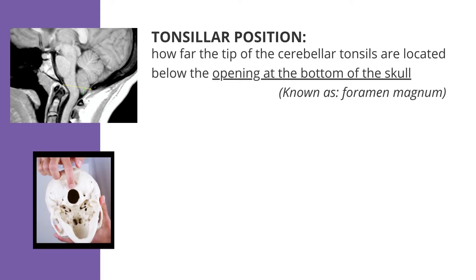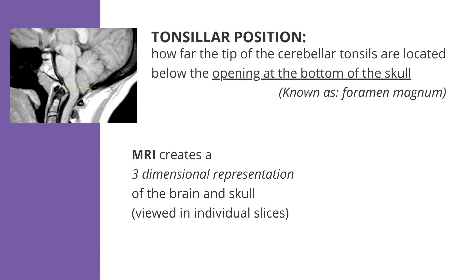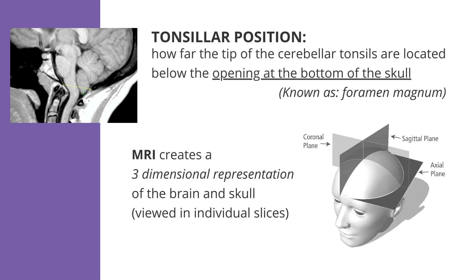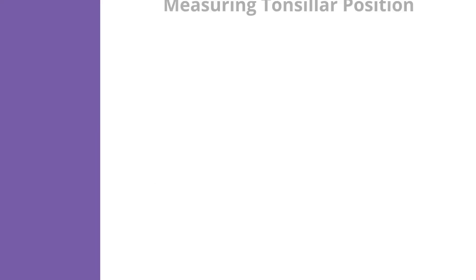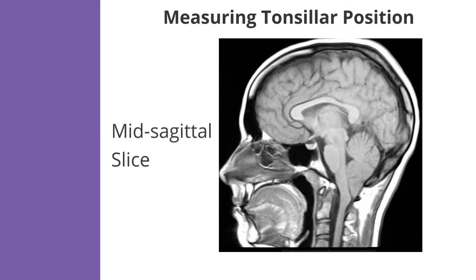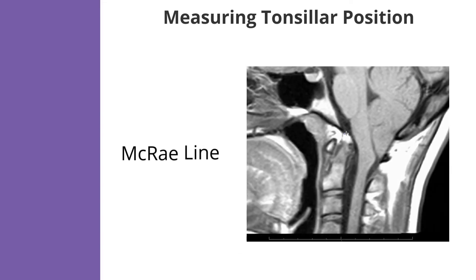To understand how tonsillar position is measured, it's important to understand that an MRI creates a complete, three-dimensional representation of the brain and skull, which are then viewed in individual slices. To measure tonsillar position, first we select what is called the mid-sagittal slice of the MRI, which basically splits the head in half running from the nose to the back of the head. Next, an imaginary line is drawn across the skull opening.